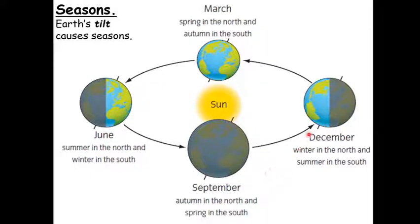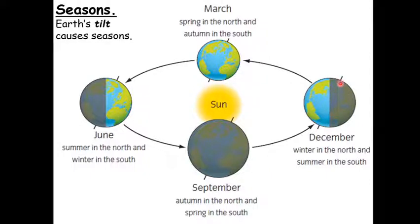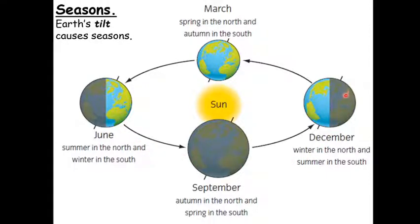Fast forward six months for the Southern Hemisphere to December: the Northern Hemisphere is tilted away, but the Southern Hemisphere is now tilted towards the sun. So they have their summer in December while we have our winter. For the Northern Hemisphere, as the Earth orbits, days get longer and longer until June — our longest day — then shorter and shorter until December, our shortest day.